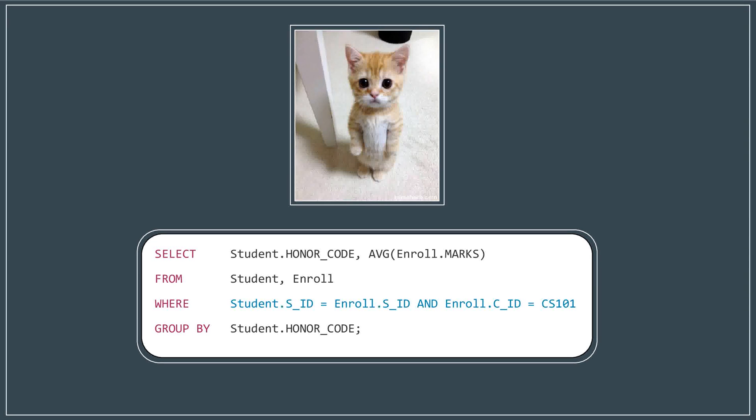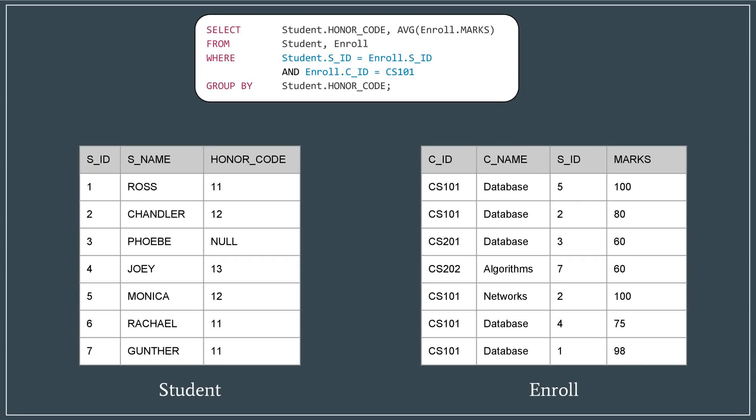This innocent looking query performs a join operation, which is the most central operation in relational databases. For gigabytes of data, which is common nowadays, running this query could take hours to process. Seems useless, right? Let's see how it can be made better.